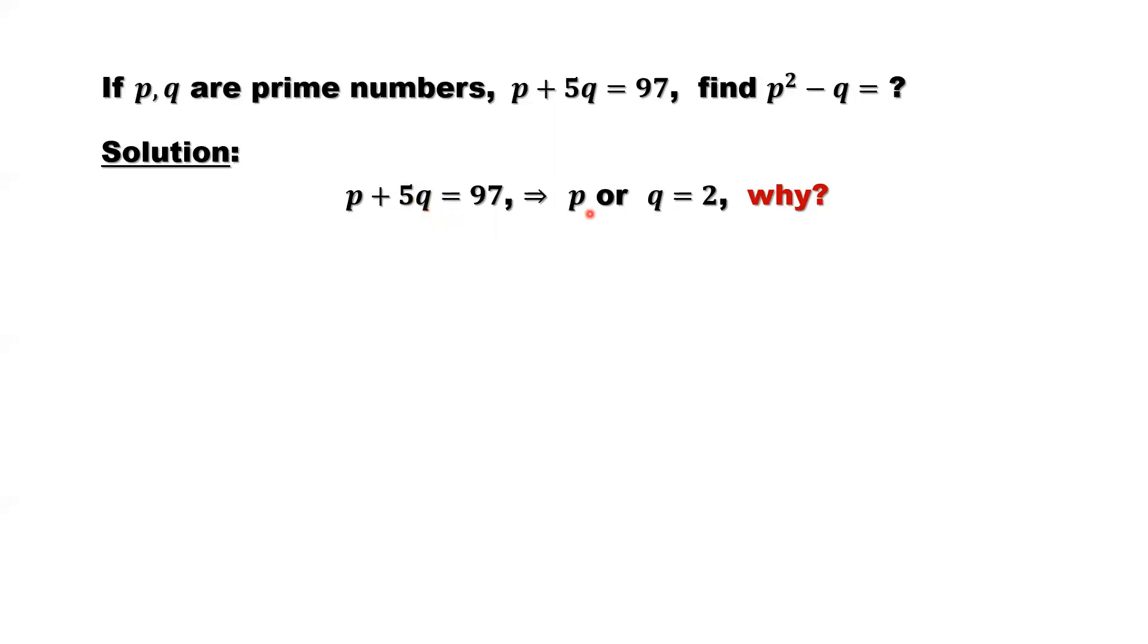If it is an even number, why we said there should be 2, not other, like 4? Because both numbers are prime numbers. Prime numbers, we only have one even prime number, which is 2. So here, we only have two possible situations. p equals 2 or q equals 2.